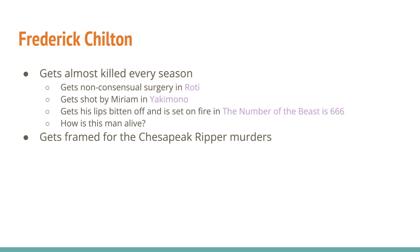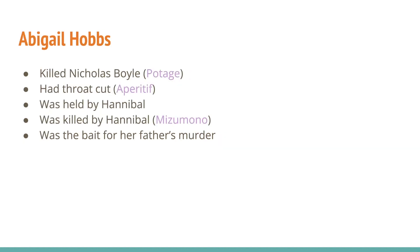Frederick Chilton gets almost killed every season: starting with non-consensual surgery in season one, he gets shot by Miriam in the face in season two, and in season three he gets his lips bitten off and is set on fire. He also gets framed for the Chesapeake Ripper murders. Abigail Hobbs killed Nicholas Boyle, had her throat cut, was killed by Hannibal, and was also the bait for her father's murder — she's been through a lot.